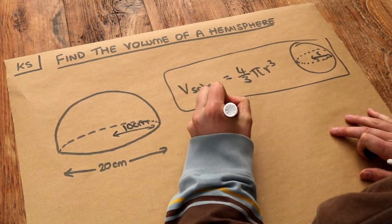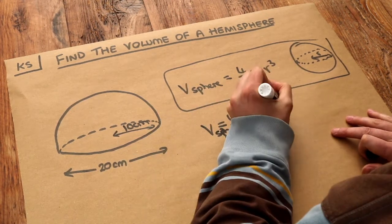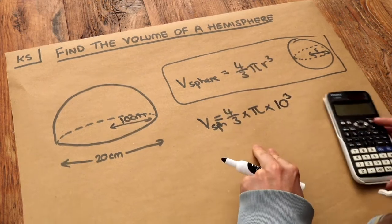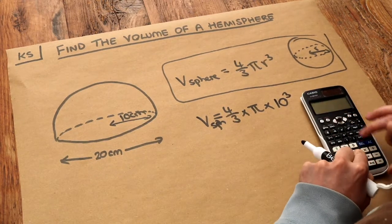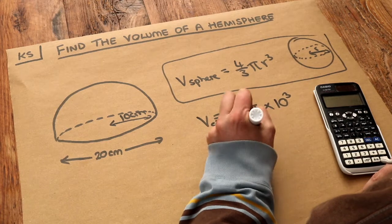Now if we use this formula you get 4 thirds times pi times 10 cubed and if we do that on our calculator we get 4,000 over 3 pi.